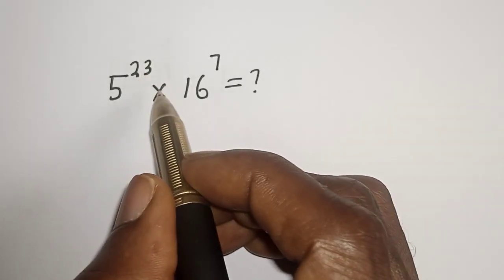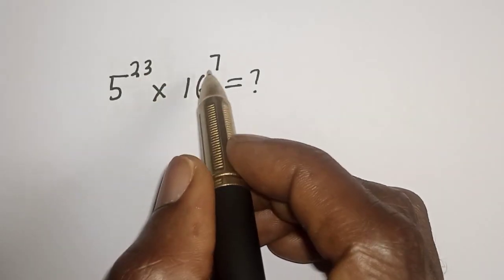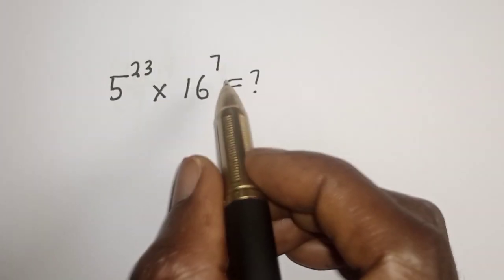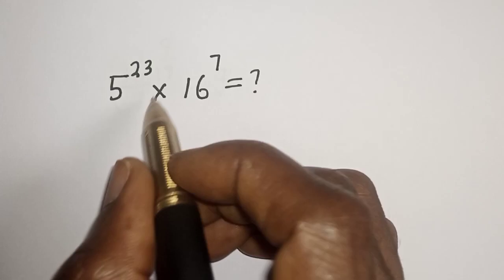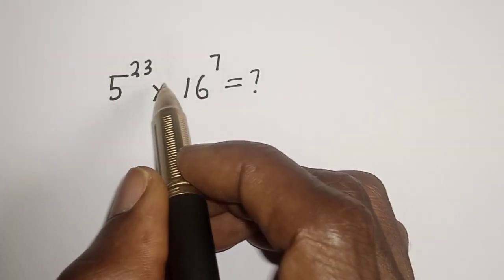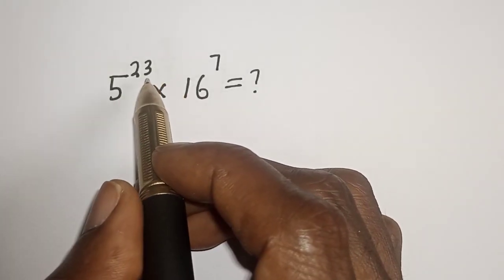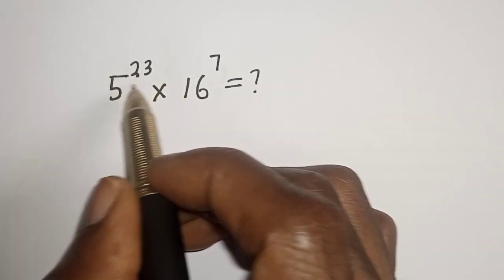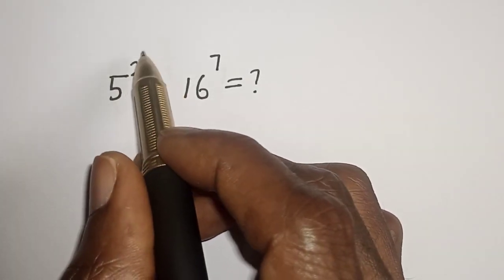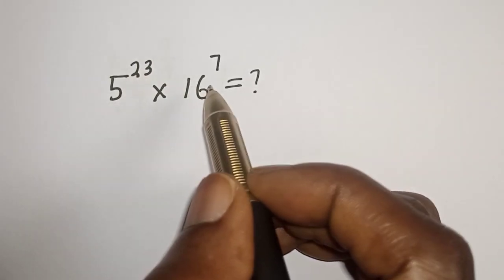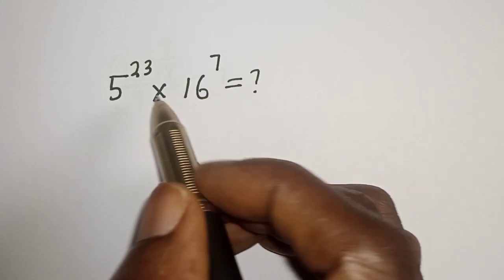5 raised to power 23 multiplied by 16 raised to power 7 is equal to what? Hi everyone, welcome to my class. In this class, we quickly want to simplify this nice math problem without using a calculator.